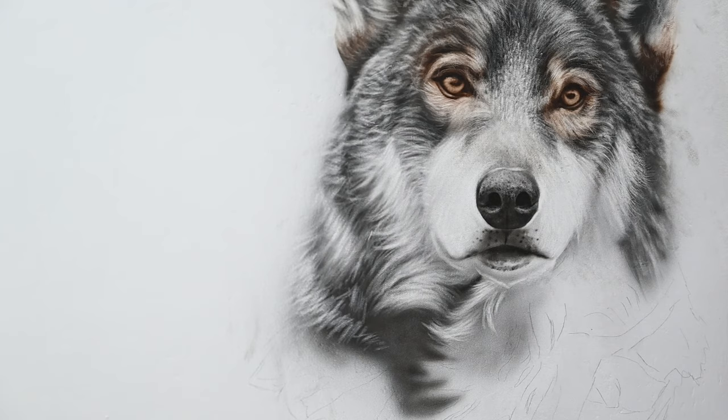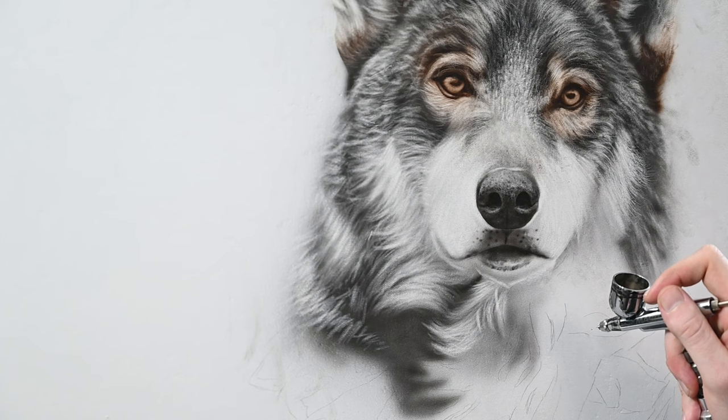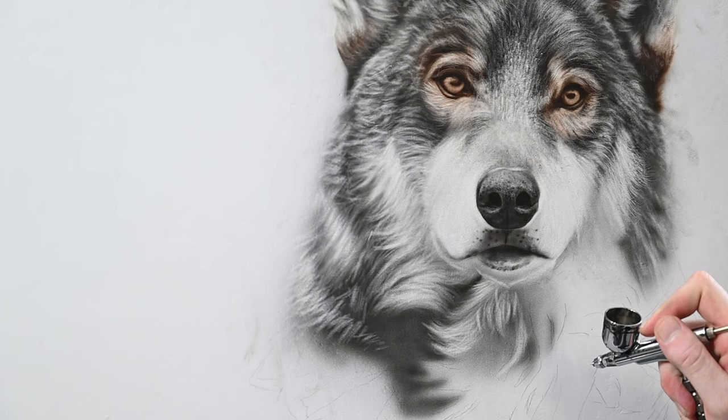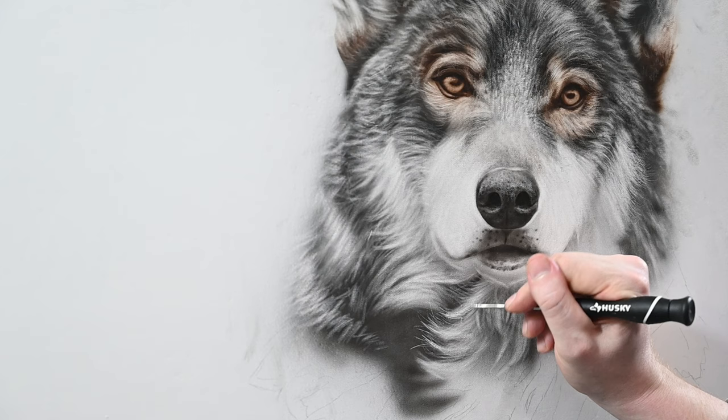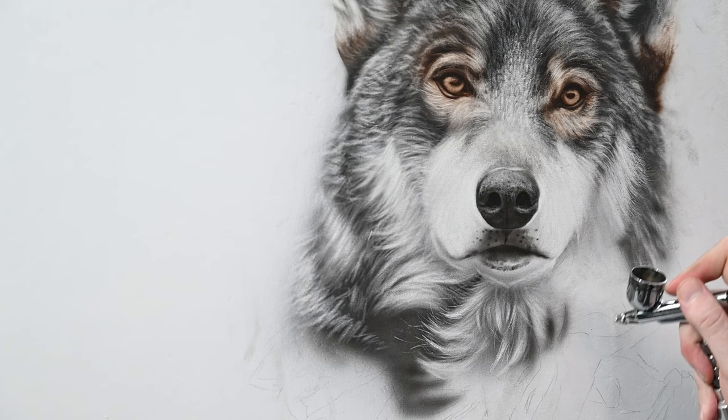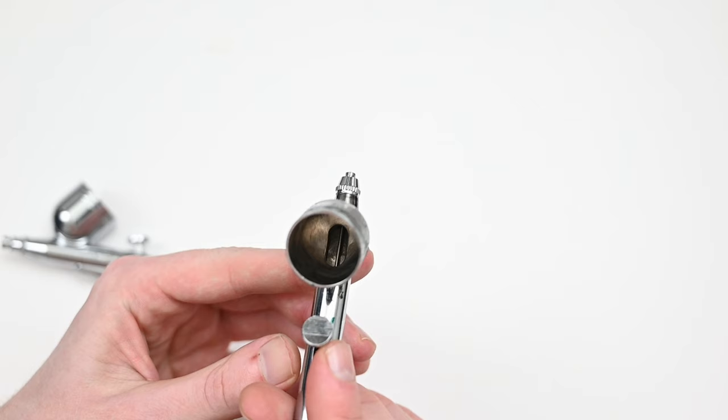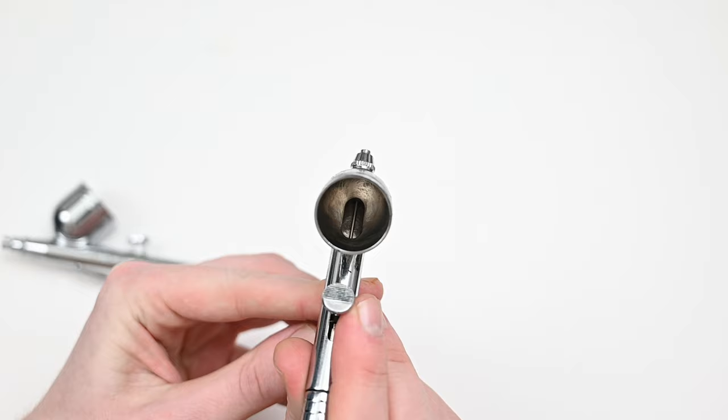But the good thing is that this airbrush sprays great. You really can do every single thing that you can with an Iwata Eclipse or a Badger Patriot 105. The main differences between those airbrushes and this one is that those are just built to a much higher standard. So I would say that if you're looking to get into airbrushing and you want to try different nozzle sizes and different needle sizes, this master airbrush is an excellent option. You could use that 0.2 millimeter needle and nozzle for some detail work. And then when you want to spray some thicker paints like a base coat or maybe a varnish at the end, you could swap over to that 0.5. And for 40 US dollars, you're not going to get this from any other airbrush.